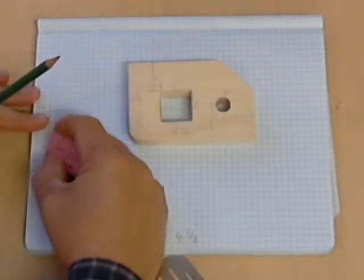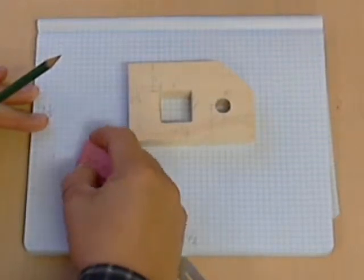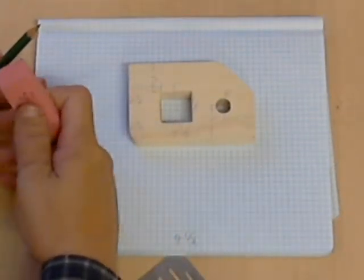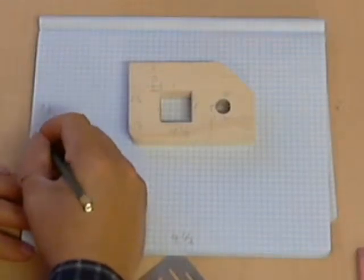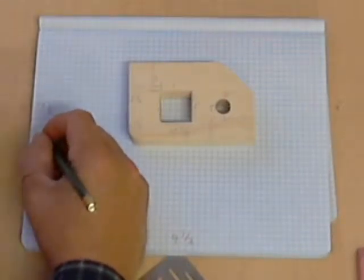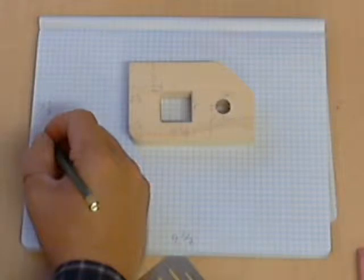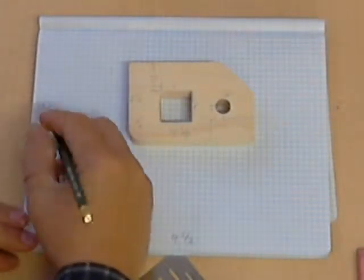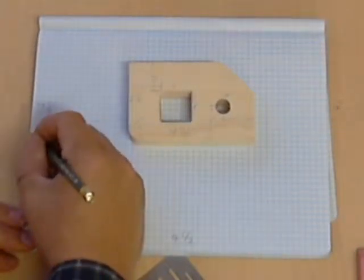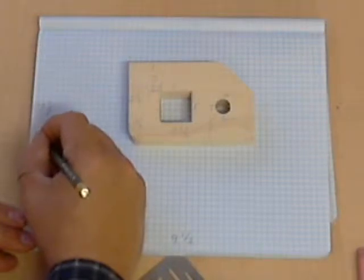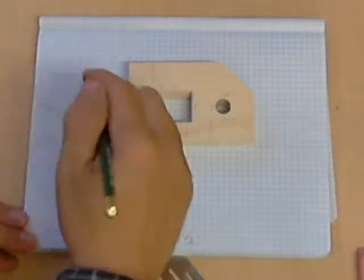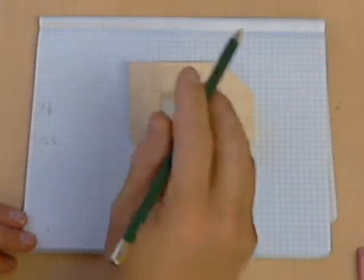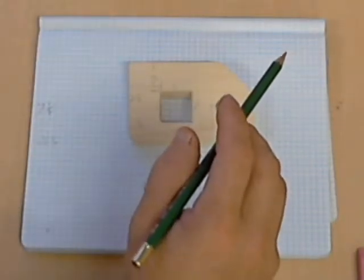So I know that I need 1.3 inches, which is approximately an inch and three sixteenths. Just a little bit less. Not quite down to five sixteenths. Part way in between. So I know I need an inch and five sixteenths to three sixteenths. That is my space going top to bottom vertically.